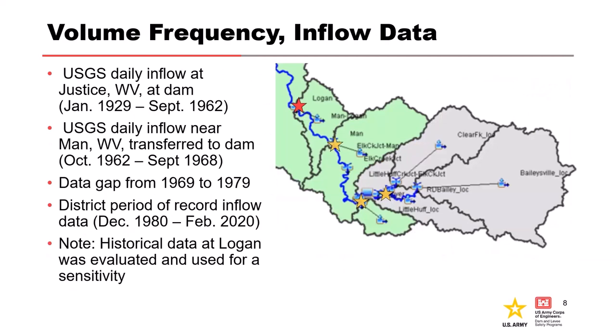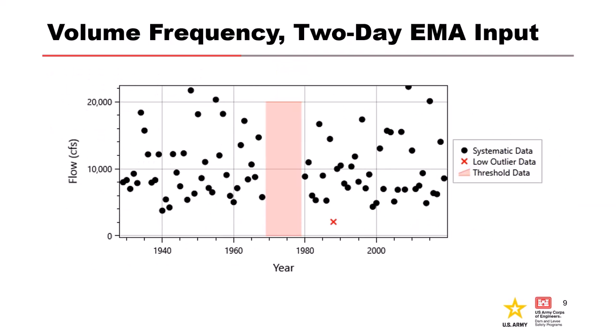For volume frequency inflow data, there is readily available USGS gauge data prior to dam construction, both upstream and downstream of the current dam site. Available daily and peak flows were used to estimate peak annual two-day volumes at the dam site for years 1929 to 1968, adding 40 years of additional systematic data. There's a data gap from 1969 to 1979, about 10 years before the dam was built. Historical data at the Logan gauge was not used in the period of record because the gauge was farther downstream and we couldn't corroborate it.